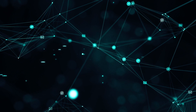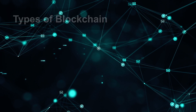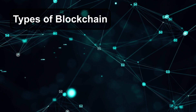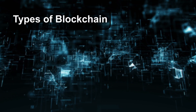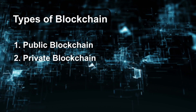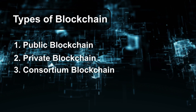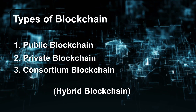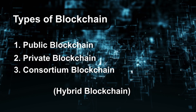We have already understood about blockchain and its working in this channel. Today we will learn about different types of blockchain. Mainly there are three types of blockchain: public blockchain, private blockchain, and consortium blockchain. Besides these, we have hybrid blockchain, which is nothing but just a combination among these three blockchains.